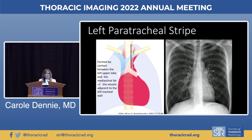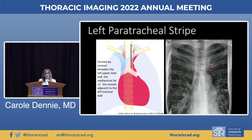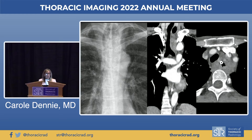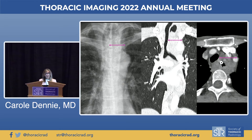The left paratracheal stripe is formed by contact between the left upper lobe and the mediastinal fat, plus or minus the vessels adjacent to the left tracheal wall, often seen more like a reflection where it disappears as the subclavian and carotid vessels exit the thorax. It can be widened in the setting of tumors located posteriorly adjacent to the trachea, lymphadenopathy, neurogenic tumors, or esophageal tumors. In one case, marked widening is due to a very large esophageal cancer in a 60-year-old woman.